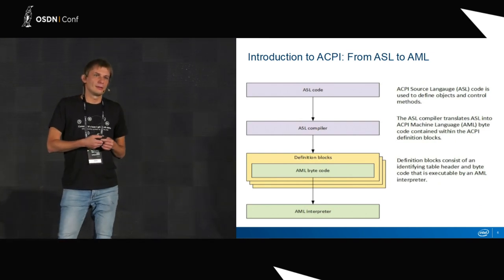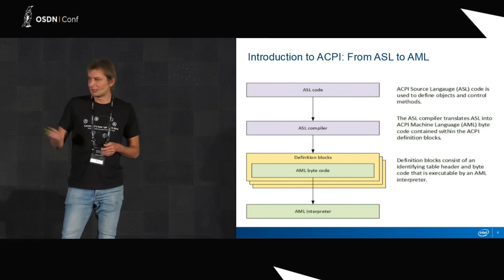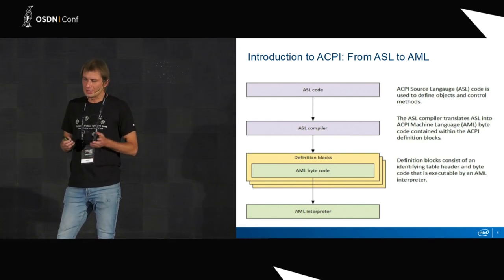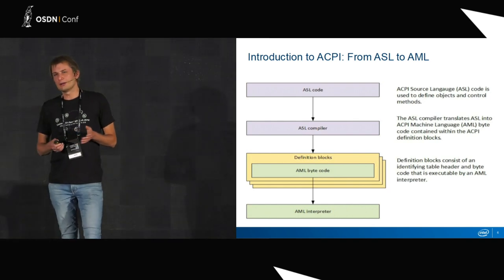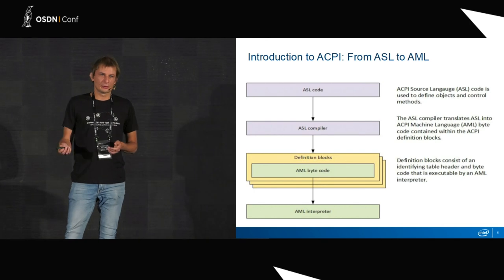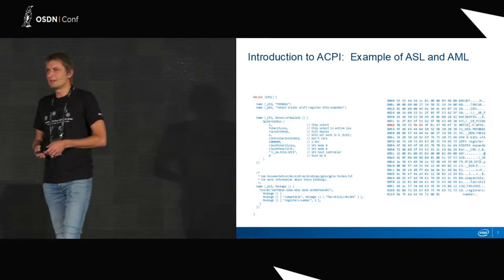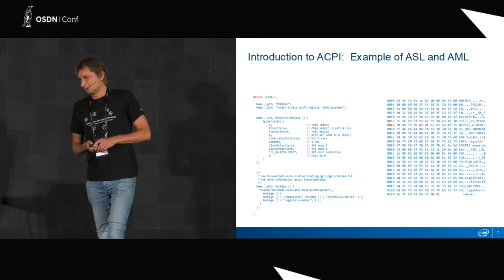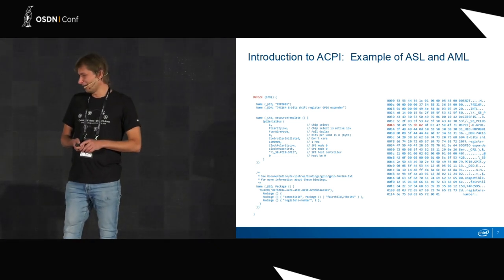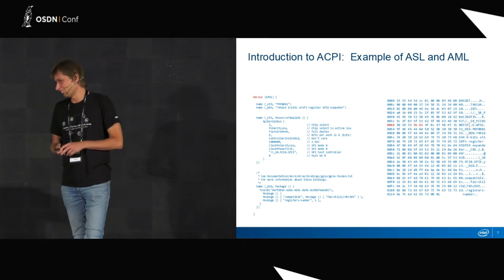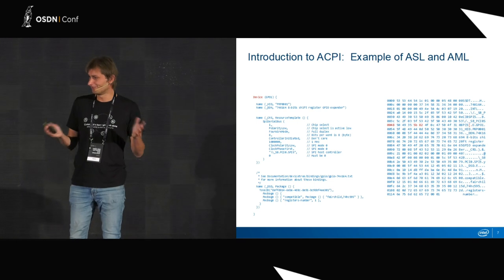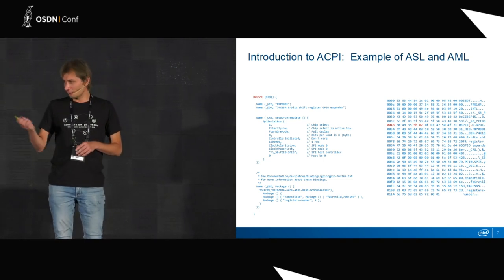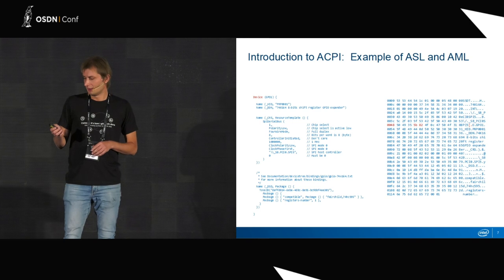ACPI, as you saw on the previous slide, has its own interpreter, so it has a domain-specific language. That's why you need to translate from source code to byte code. Here, for example, we see how one device node is translated to byte code. You could see where it starts, marked in red, so you could estimate how big the text really is and how big the binary code is out of it. We will talk later about the contents of this table.